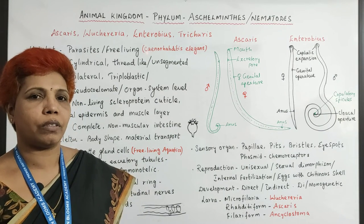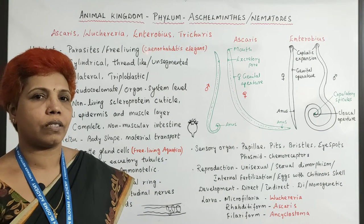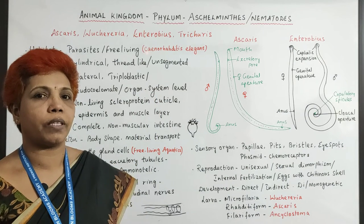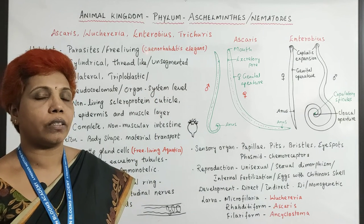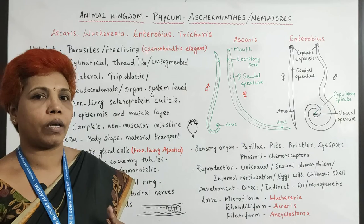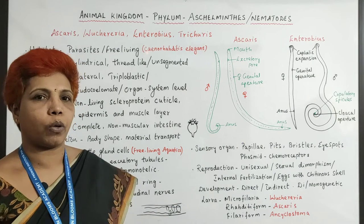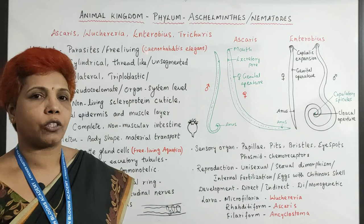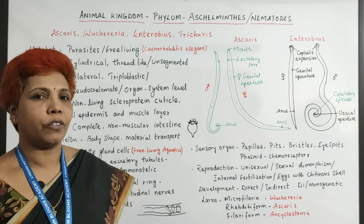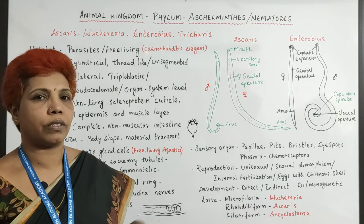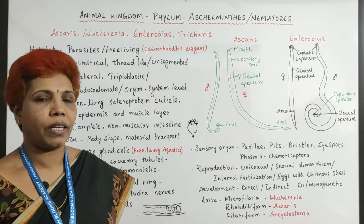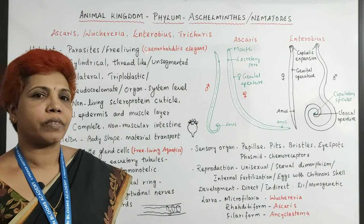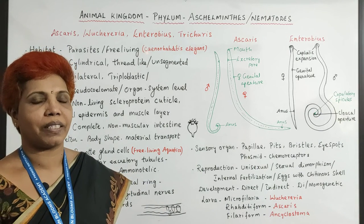To summarize Aschelminthes: they are pseudocoelomate animals with no segmentation in their body. The larval names are important, and sexual dimorphism is a striking feature. If you have any doubts, please put them in the comment section. Thank you — subscribe and share please.